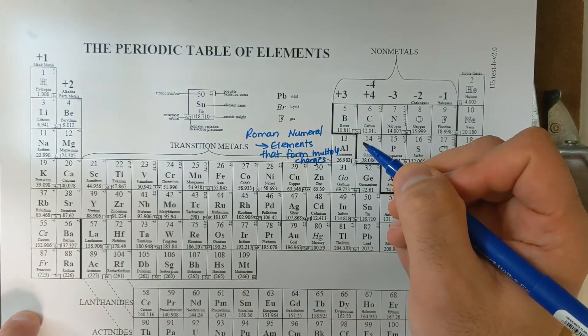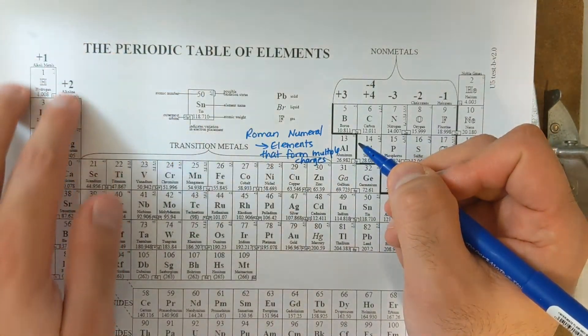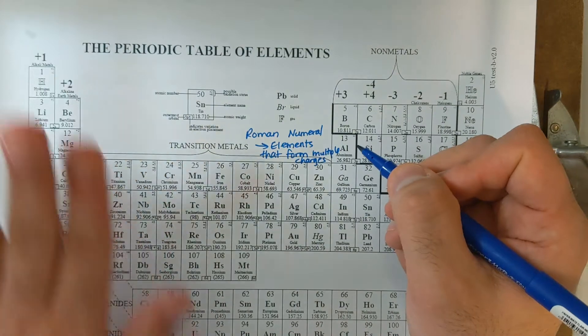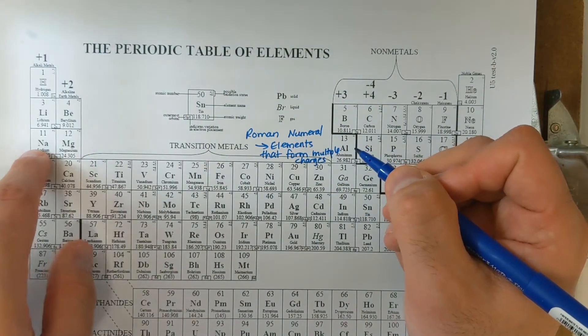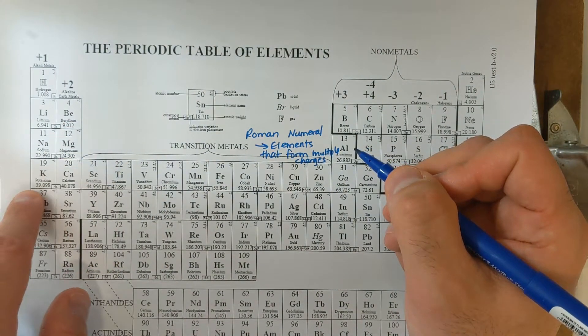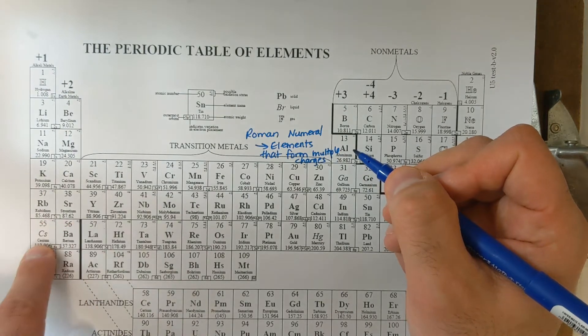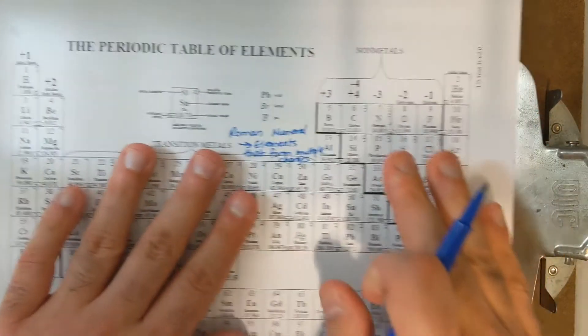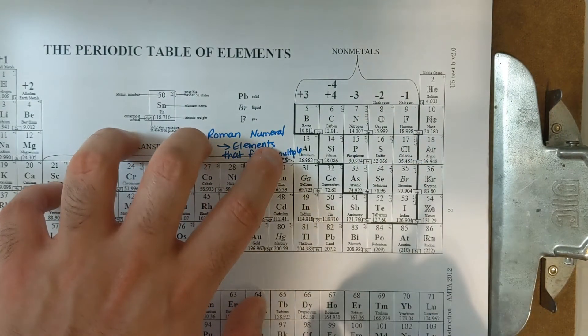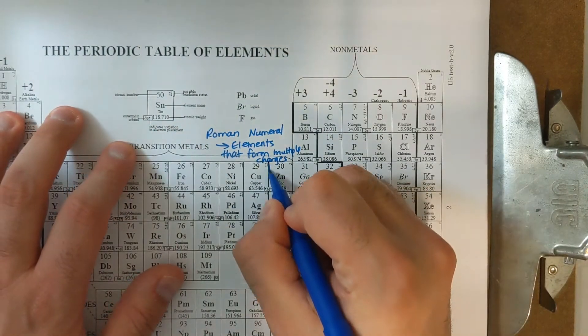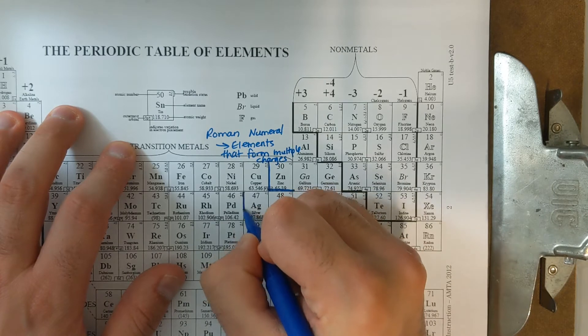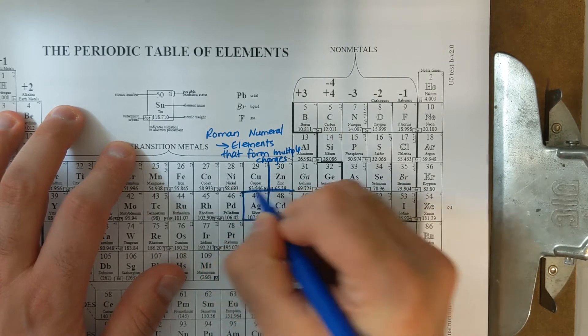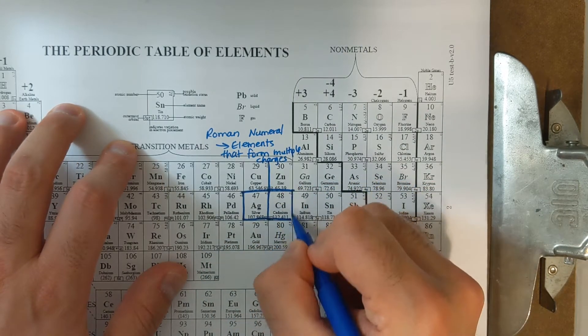That's not going to be group one or group two. These elements tend to form plus one or plus two, so I'm not going to need a Roman numeral if it's lithium, beryllium, sodium, magnesium, potassium, calcium, rubidium, strontium, cesium, barium, francium, or radium. Also, aluminum is not going to need a Roman numeral. Zinc and silver are not going to need Roman numerals, and cadmium is also in that business too.